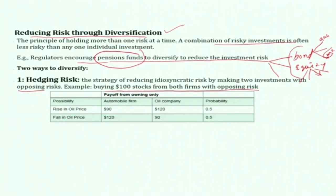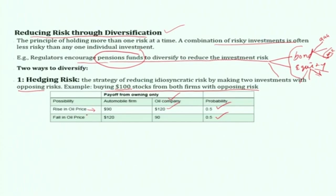Consider these two opposing firms — an oil company and an automobile firm. Assume investment is made only in these two firms with opposing risk. The probability of rising oil prices is 50%, and the probability of falling oil prices is 50%. If there is a rise in oil price, the oil-producing company's income increases, dividends increase, and share price increases — so a 100-dollar investment becomes 120 dollars. If oil prices fall, the oil company's stock comes down to 90 dollars.